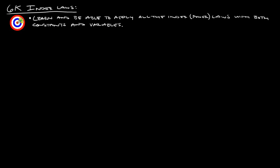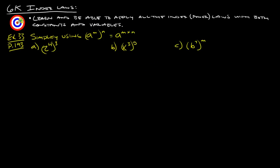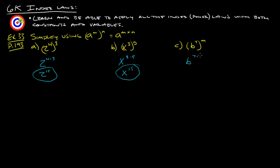Example 33 from page 193: power raised to a power — you multiply the exponents. So 2 to the 4 times 3 is 2 to the 12th. x to the 3 times 5 is x to the 15th. And b to the 7 times m — you can't really simplify that further. It might look nicer to just write b to the 7m without the multiplication sign in between.